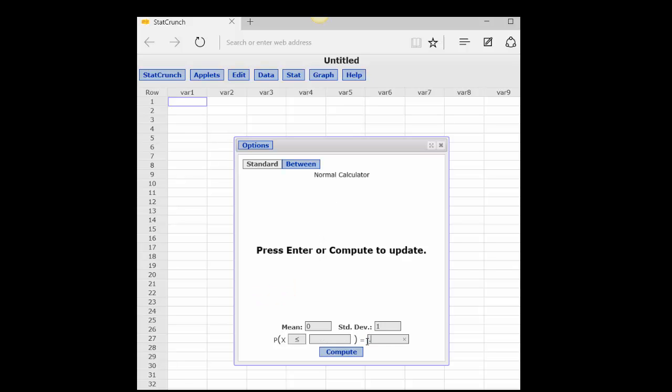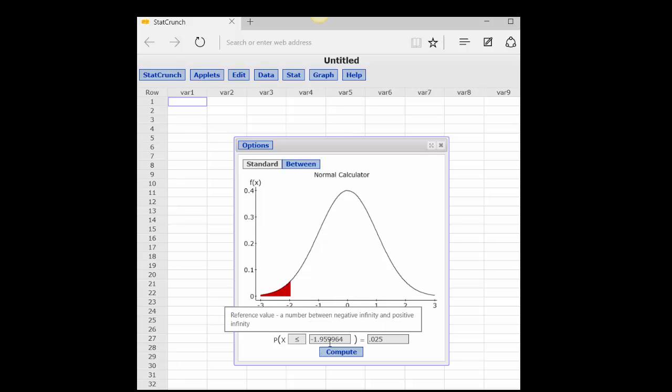So I'm going to put in .025 and Compute. And we see that on the two-tailed test, for 95% confidence level, the critical z becomes 1.96, and you've seen that before.